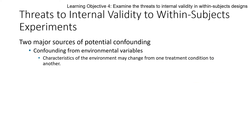This gets us to threats to internal validity. First is confounding variables from the environment — environmental factors may change from one treatment condition to another. If you give people drug A in the morning and drug B in the evening, it could be a diurnal effect — basically a time-of-day effect — that is actually causing the change rather than the drug itself. Similarly, if you give participants the drug in different rooms, that environmental difference could be the confound.